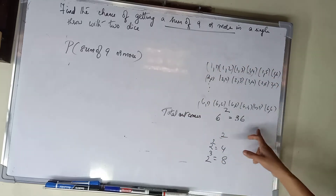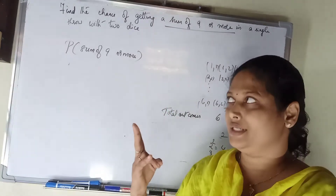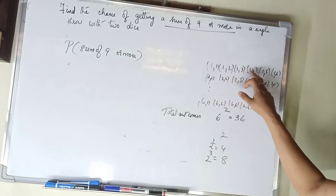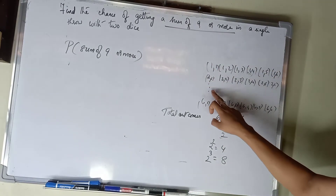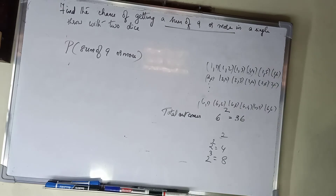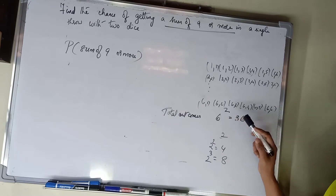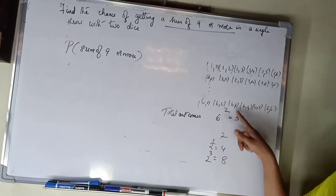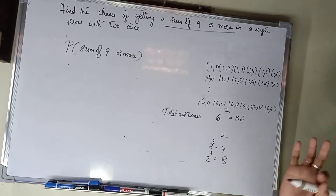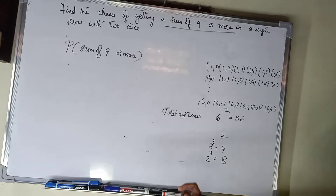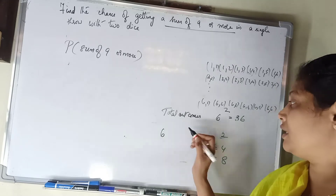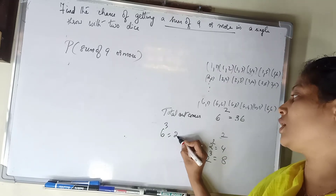The total outcomes are 36. We will learn and apply the formula. The total outcomes are 36. Each combination is counted: 1 through 6 on first die, 1 through 6 on second die, giving 36 total outcomes.